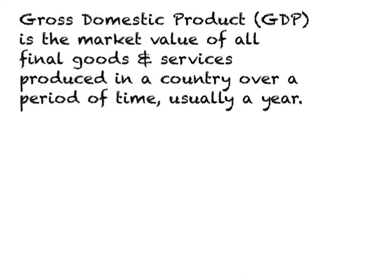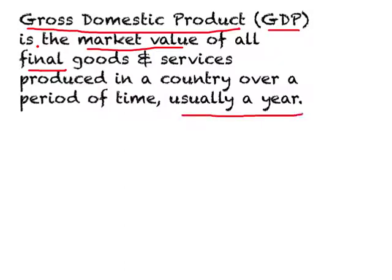Let us look at the concept of GDP, which stands for Gross Domestic Product. GDP is simply the market value of all final goods and services produced in a country over a period of time, usually a year. When we say market value, we are looking at anything or any activity which enters into market transactions and the market price thereof.